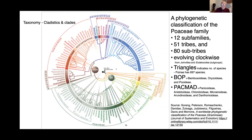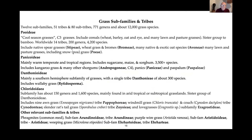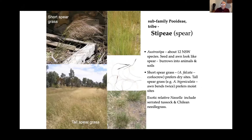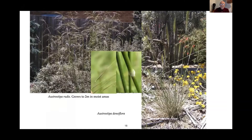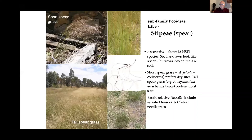This slide is just for reference — it shows some of the different grasses and some of their characteristics. Now, grasses are a family that breaks down into about twelve subfamilies. The first one is Pooideae, and these tend to have the spear grasses in them. We talked about tall and short spear grass, but they also include things like Chilean needle grass and serrated tussock, which Joe will spend more time talking about.